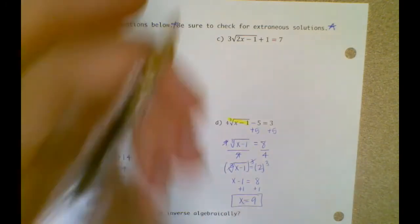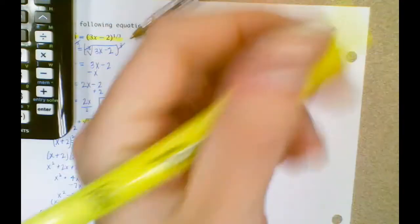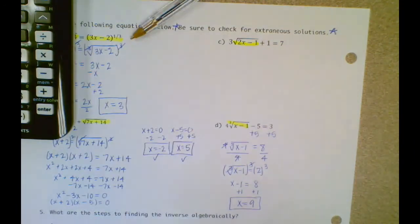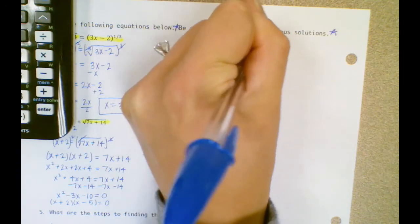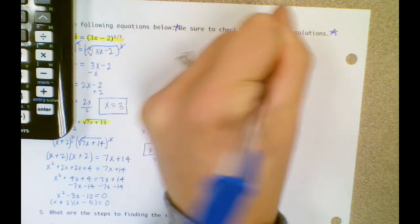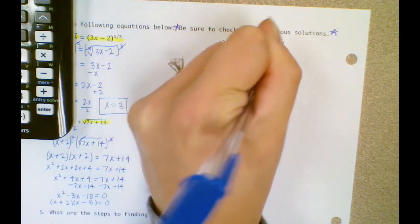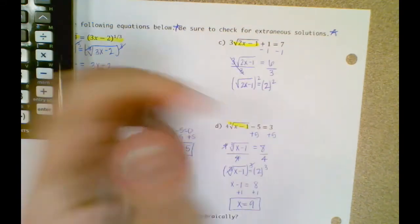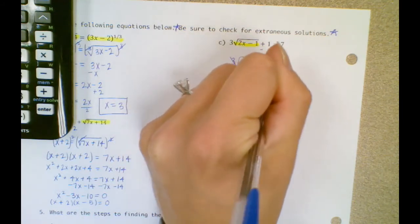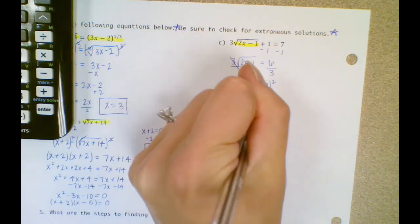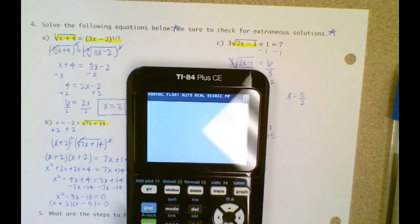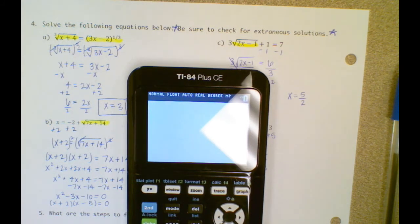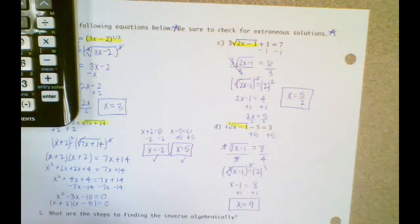And then the last one. This looks like a square root. Here's my radical, and this 3 is attached to it. I've got to get rid of this 1 first, so minus 1. That gives me 6 on the right. Divide by 3, giving 2. Then square both sides because the radical is by itself. Add 1, then divide by 2. x equals 5 over 2. Checking: 3 times the square root of 2 times 5/2 minus 1, plus 1 equals 7. There were no extraneous solutions on here, but there could be one on your quiz.